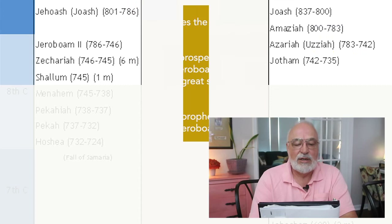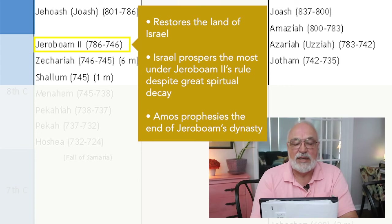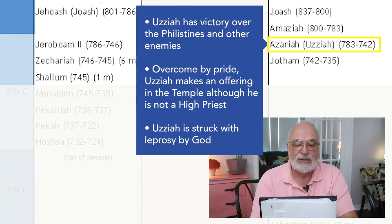Jeroboam II restores the land of Israel, and Israel knows its greatest prosperity under his rule, despite great spiritual decay. The prophet Amos prophesies the end of the dynasty of Jeroboam because of the spiritual decay. Uzziah, meanwhile in the southern kingdom, has victory over the Philistines and other enemies. Overcome by pride, Uzziah makes an offering in the temple himself, though he is not a high priest. Because of this, God strikes him with leprosy.